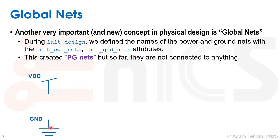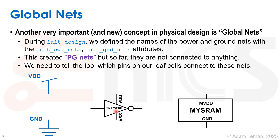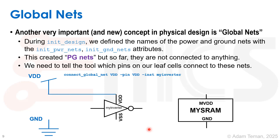We have to connect these virtual nets to our actual standard cells and macros. For example, we have a standard cell called my_inverter whose power pin is VDD and ground pin is VSS. We also have a macro called my_SRAM whose power pin is called mVDD (memory VDD), but it should connect to the main global VDD. Its ground pin is called GND, which is not the same as VSS. The connect_global_net command tells us how to connect these global nets to the pins of particular instances.